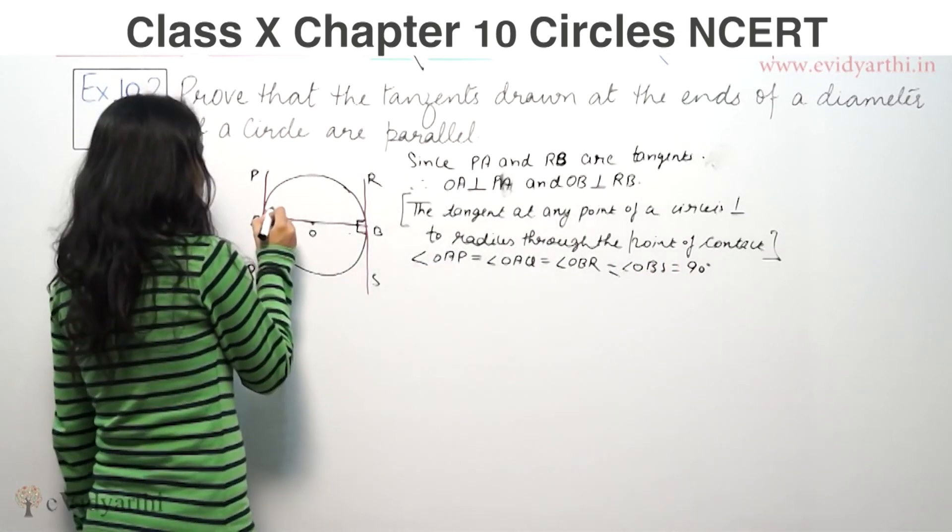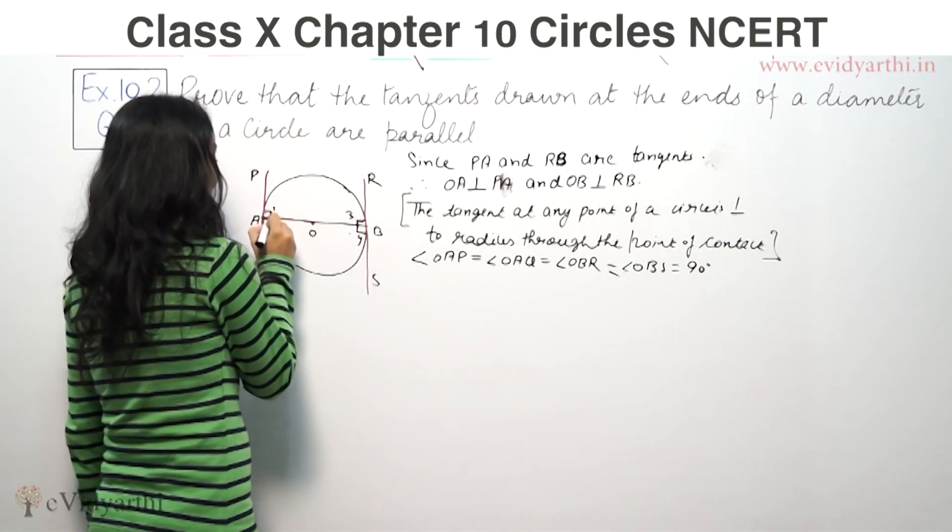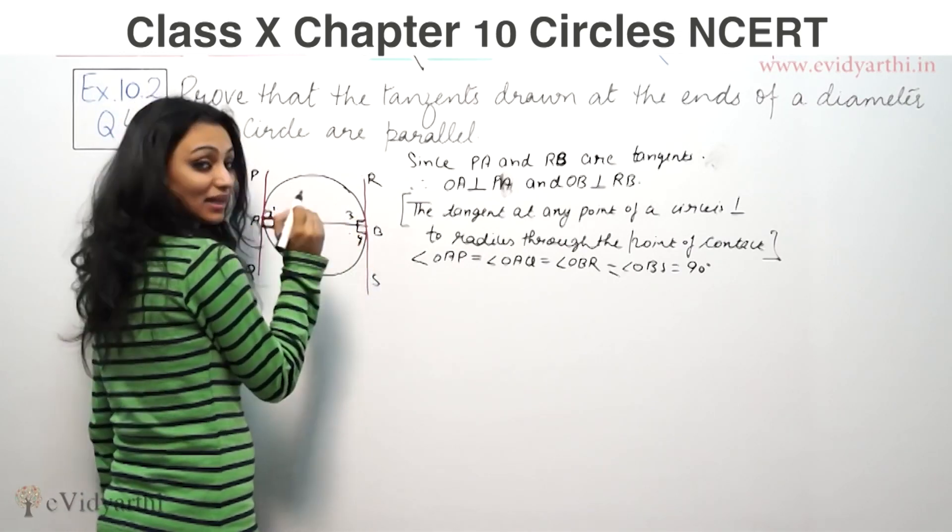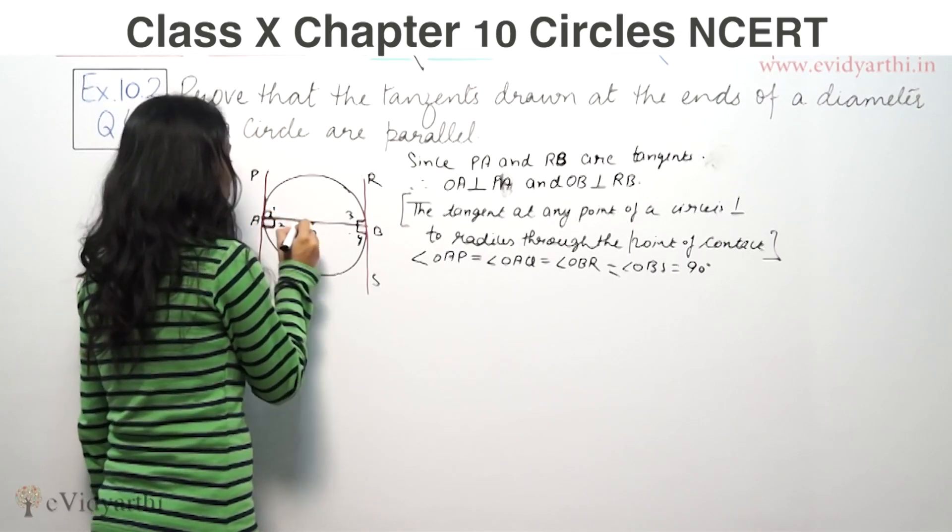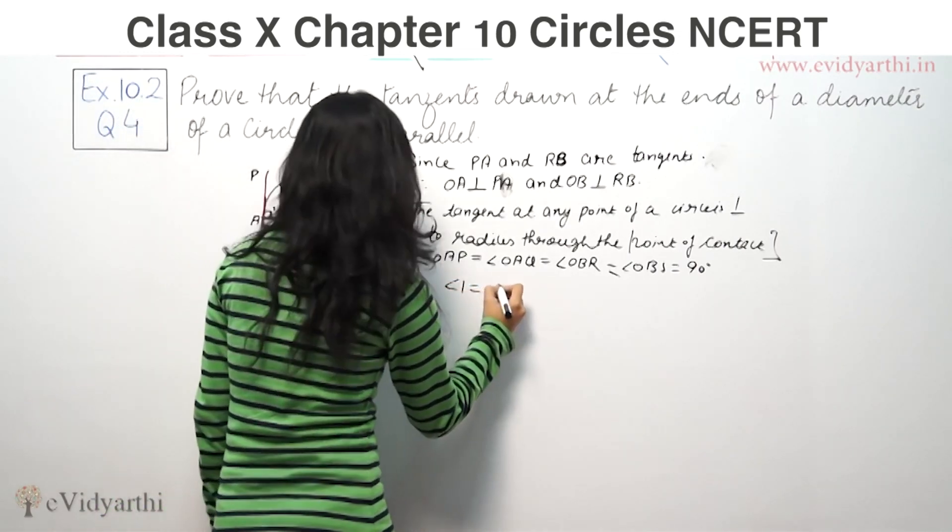Now you see, this is angle 1, this is 2, this is 3, this is 4. This angle 1 and this angle 4 are equal to 90. So angle 1 is equal to angle 4. Reason: alternate angles.